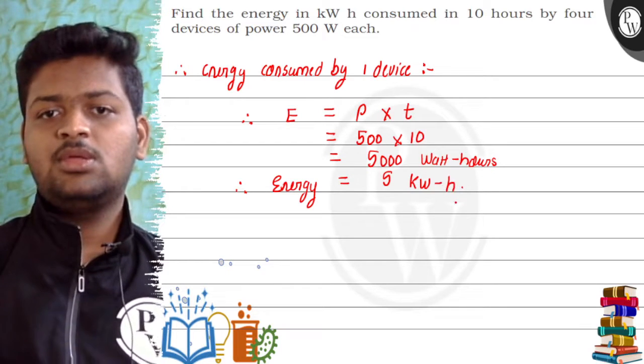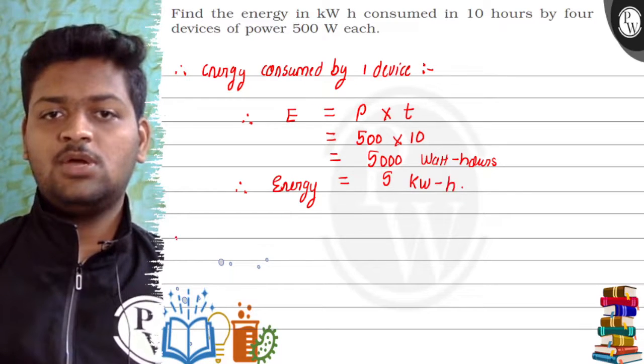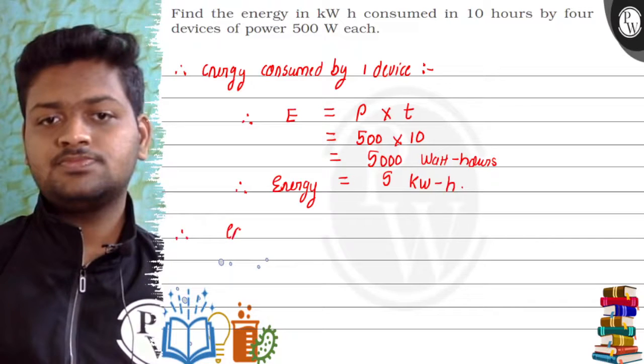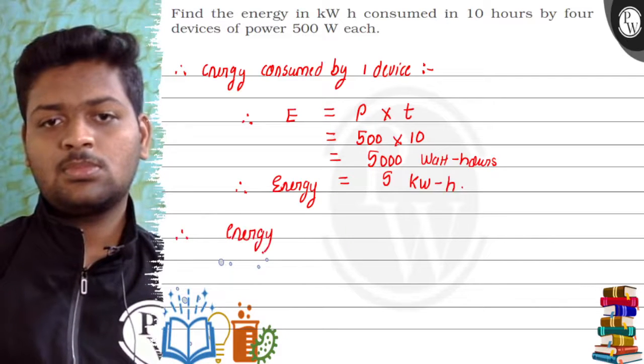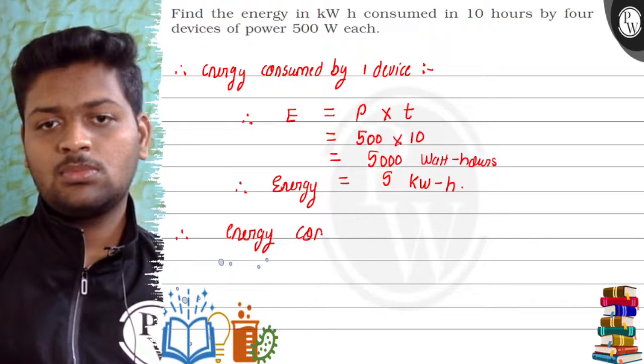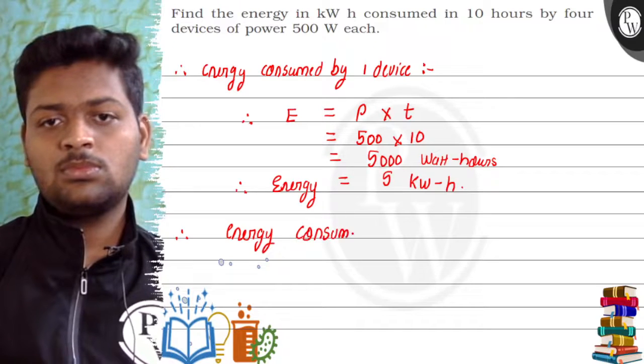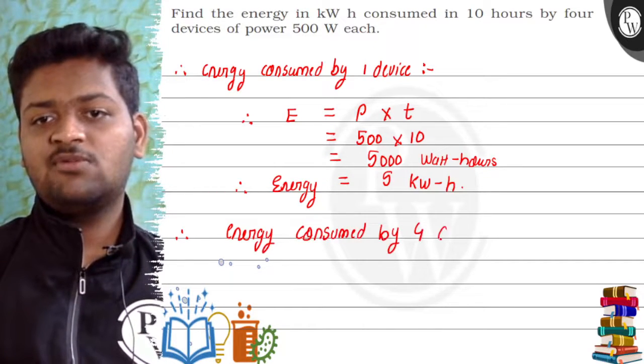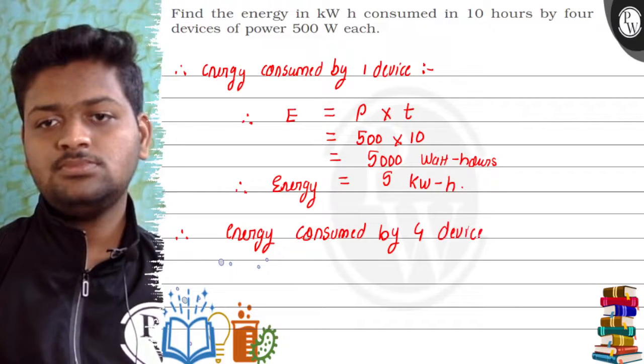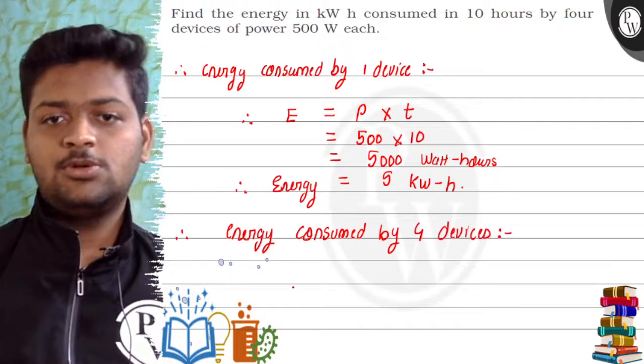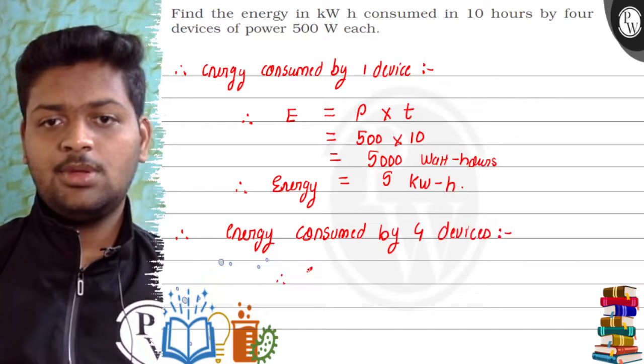Okay, now now energy consumed by four devices, this is equal to energy is equal to 4 into 5.